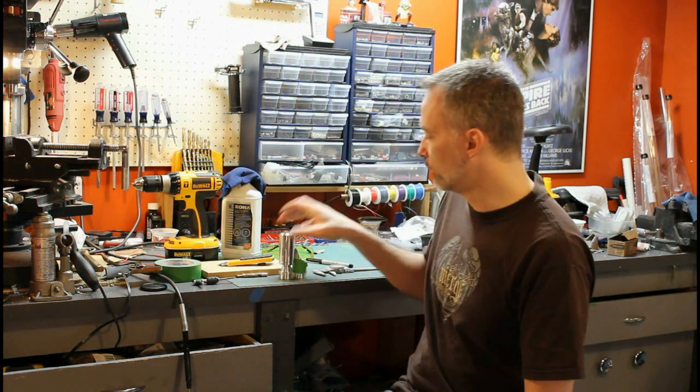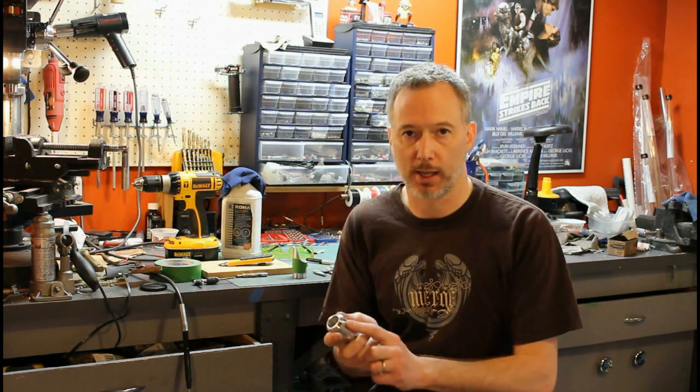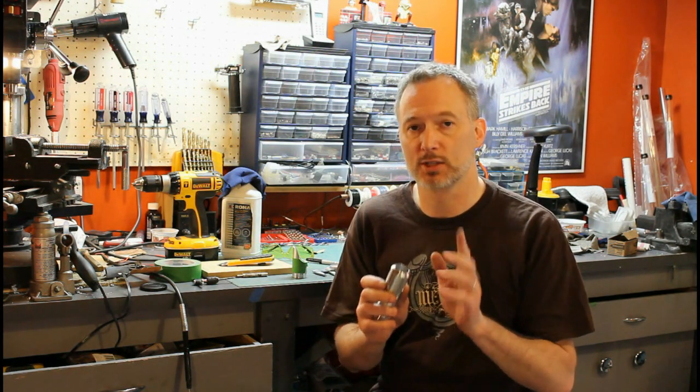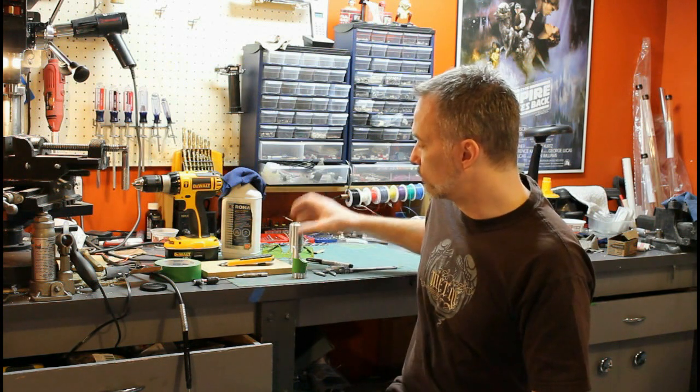Hi, welcome back to Genesis Custom Sabers. Today I'm going to show you how to drill and tap the hole for your blade retention screw. This is the screw in your blade holder that keeps your blade from flying out. I'm going to show you how to do that basic job, but also some tricks on where to best position it when you're building your saber.